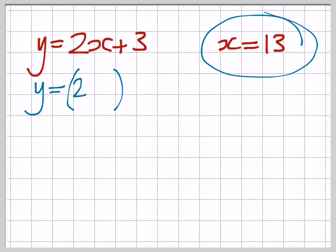And then you add on the 3 afterwards. You've got to do the times thing before you do the adding of the 3. So 2 lots of 13 would be 26, and then you add on the 3, so the value of y altogether would be 29.